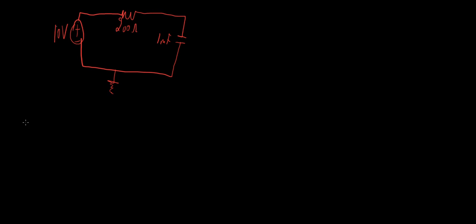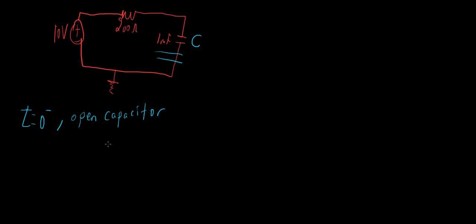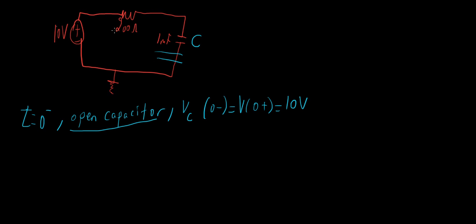We have to assume that at time T equals 0 minus, we have steady state, which basically means that this capacitor here is open. Since the capacitor is open, in order for KVL to apply, this capacitor will be 10 volts at that time. The voltage here will be 10 volts — because there is no current in the circuit when you have this open capacitor, and hence the voltage across the resistor is 0 at T equals 0 minus.